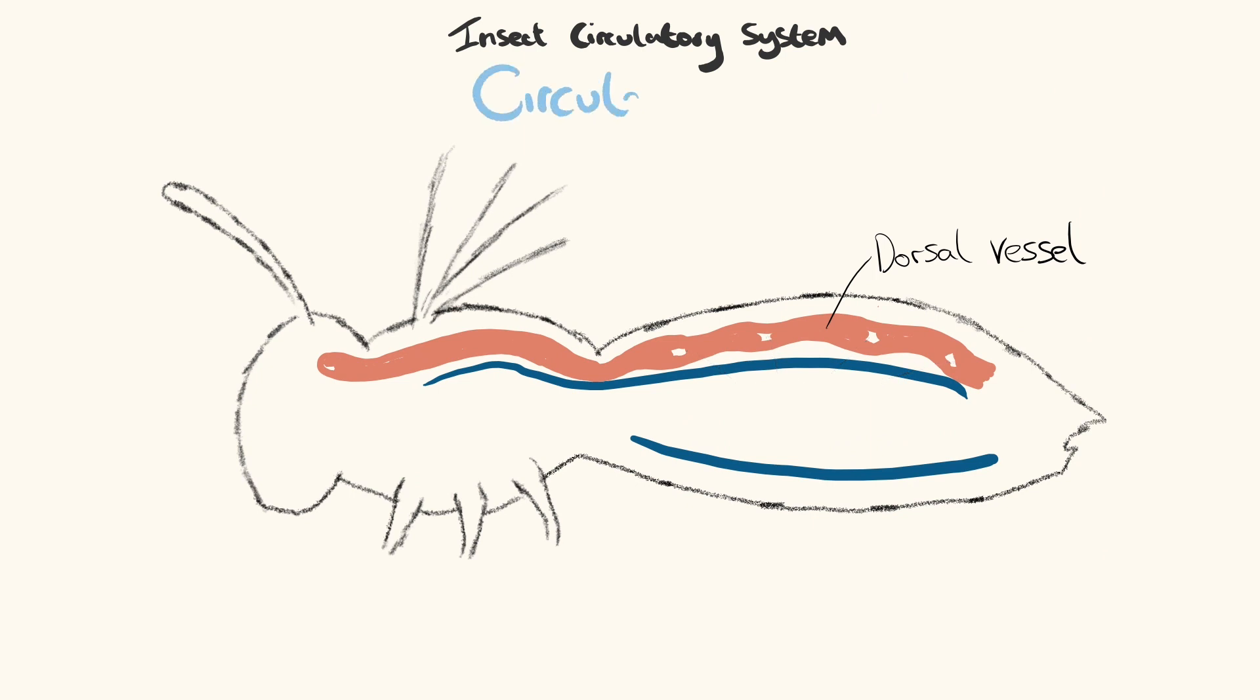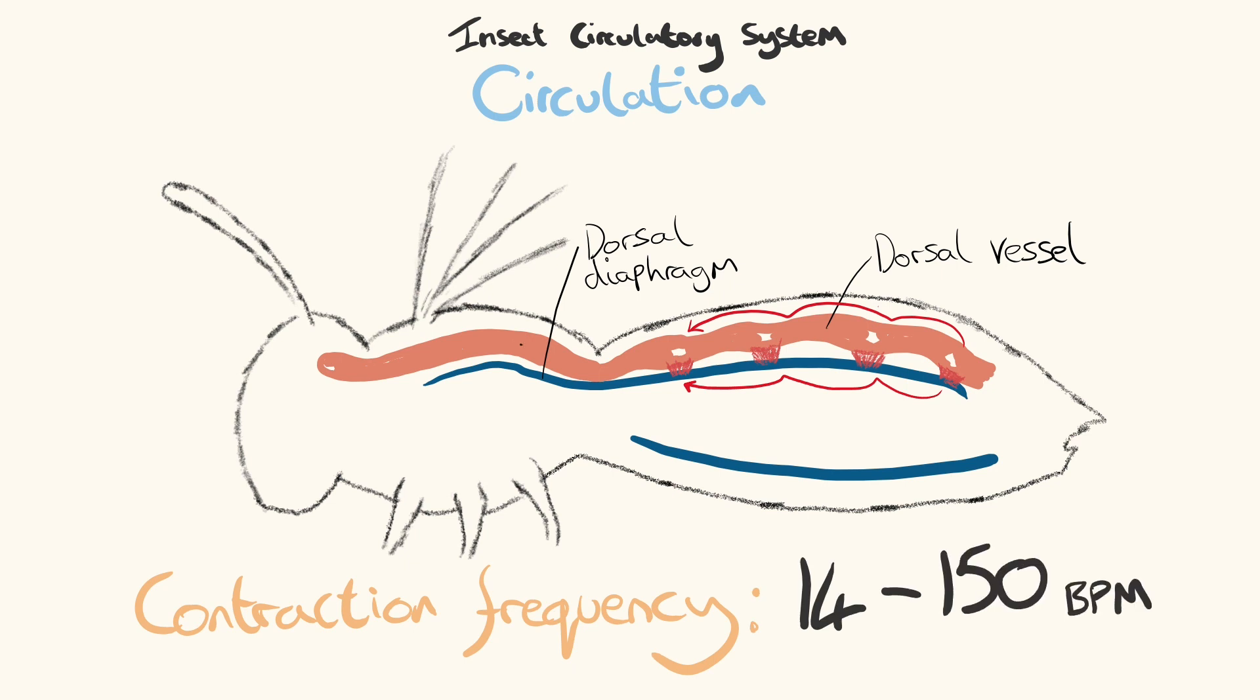In order to create flow of haemolymph around the haemocel, alary muscles of the dorsal diaphragm and myocardium undergo peristaltic contractions. These are wave-like contractions that occur from the posterior end. This creates a contraction frequency between 14 and 150 beats per minute, which forces the haemolymph within the dorsal vessel forward through each chamber towards the anterior end.